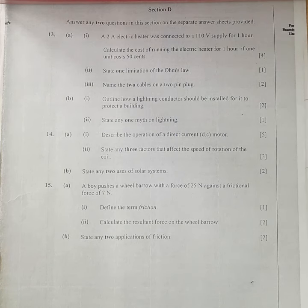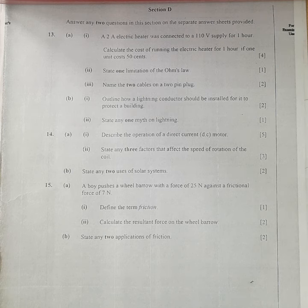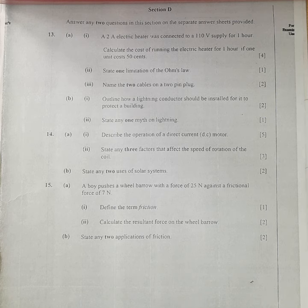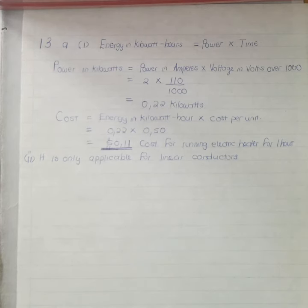Part 2: State one limitation of Ohm's Law. Ohm's Law states that electric current is proportional to voltage and inversely proportional to resistance. One limitation of Ohm's Law is it is applicable only for linear conductors. Another limitation is it is not applicable if temperature is not constant.